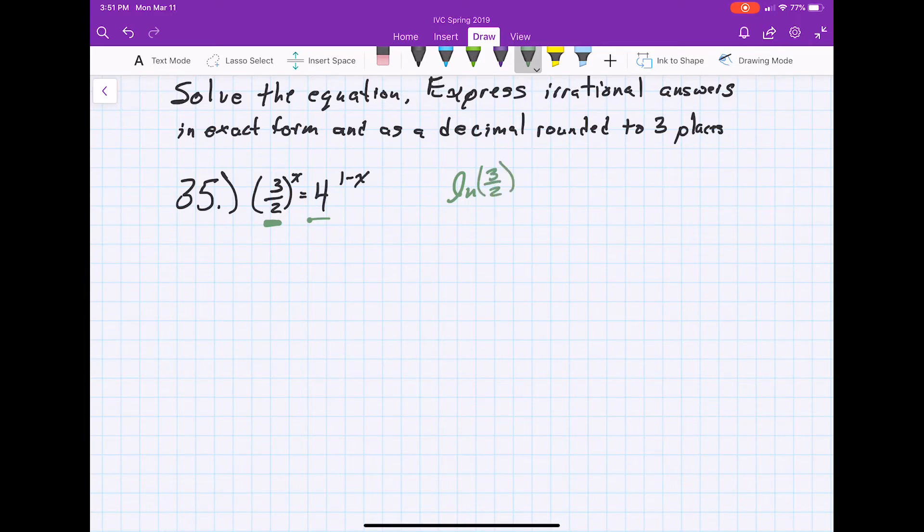So ln of 3 halves to the x power is equal to ln 4 to the 1 minus x power. What that does for us is it allows us to put that exponent out in front of the ln. So basically this is going to be x ln of 3 halves and then this will be 1 minus x ln 4.